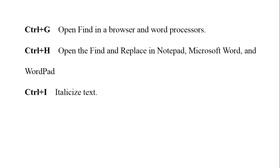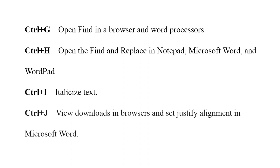The next key is control plus I, which is used to make the text italic. We all know about bold, italic, and underline — ctrl plus I makes the text italic. The next one is ctrl plus J, which is used to view downloads in a browser and set justify alignment in Microsoft Word.